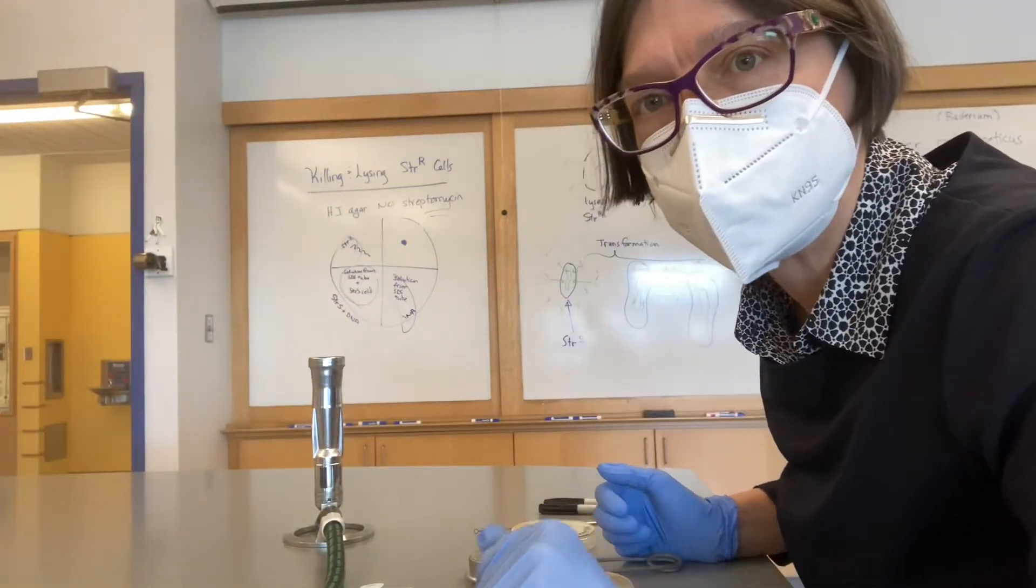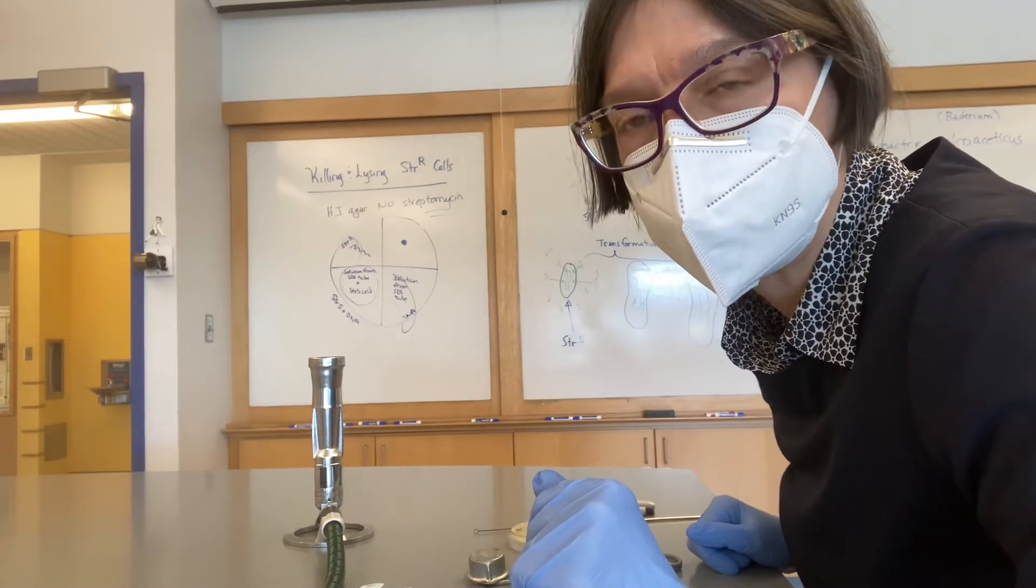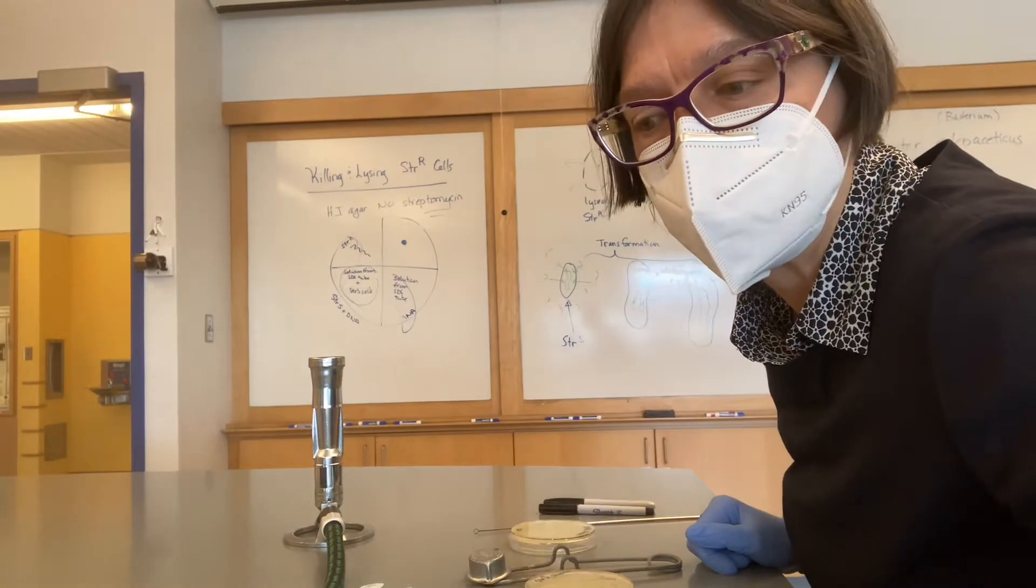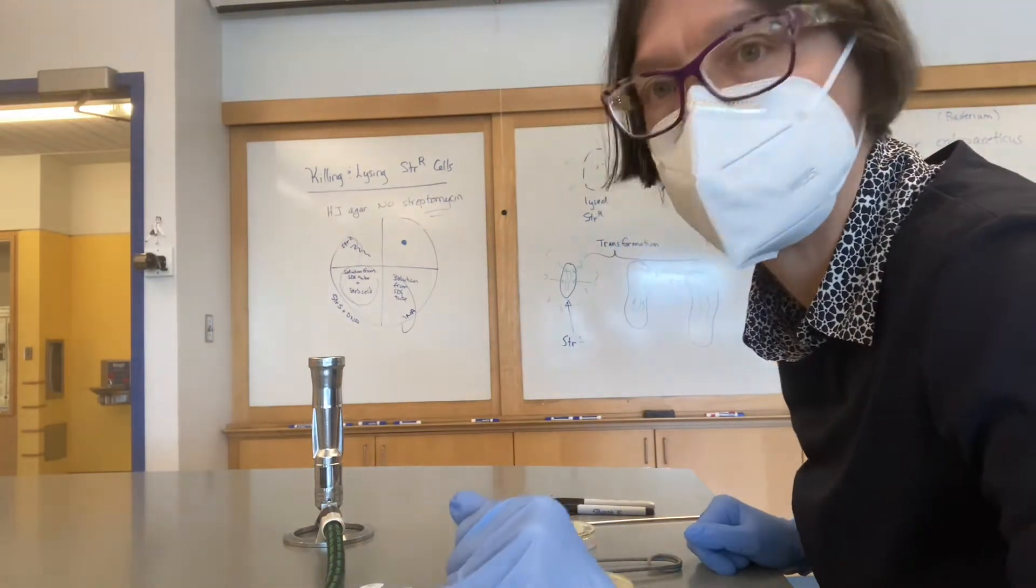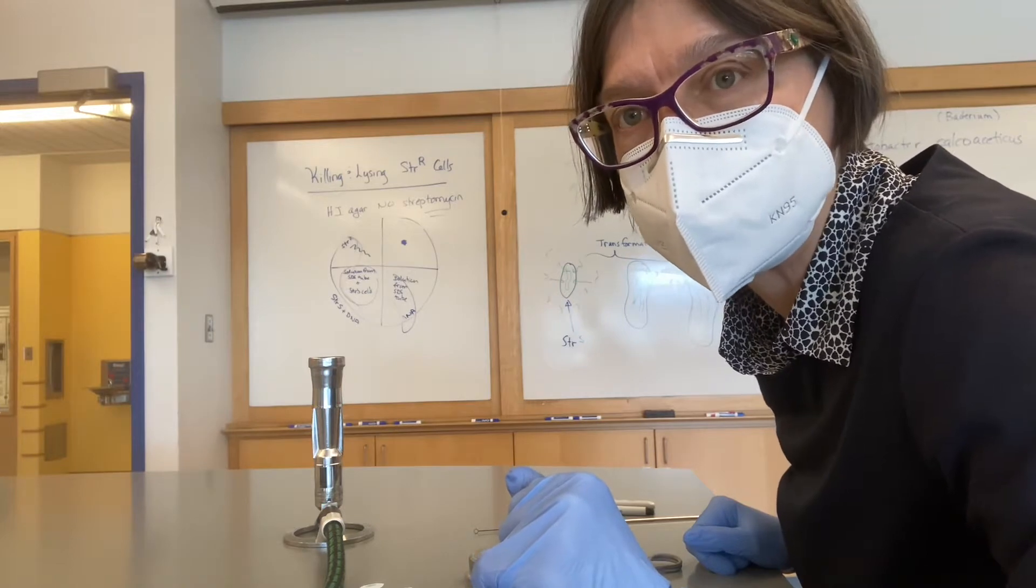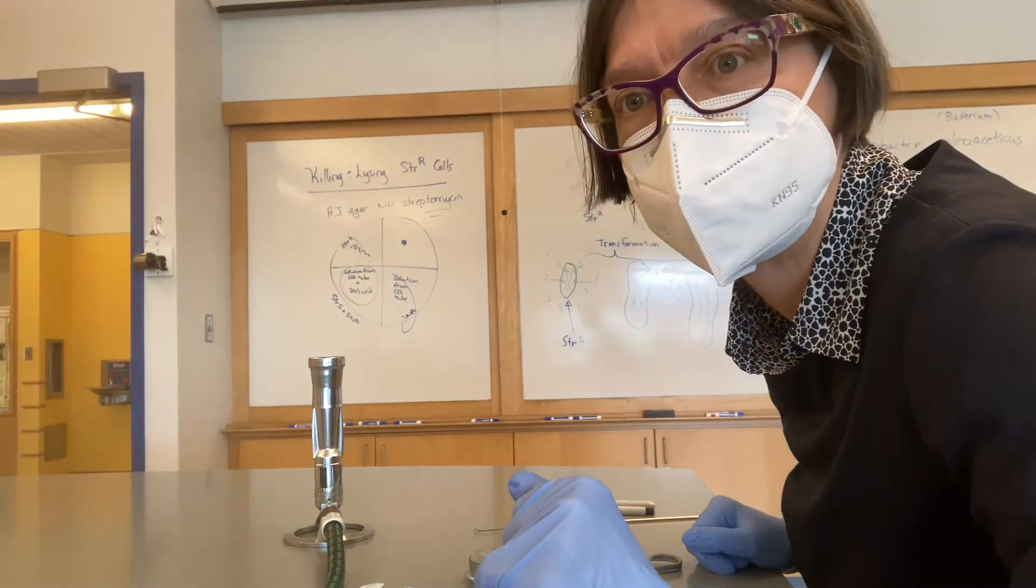Hi, it's Dr. L, and I'm going to show you the first step in the transformation experiment that you are doing for Genetics Lab. In this experiment, the goal is to take two strains of Acinetobacter calcoaceticus, a naturally competent bacterium.